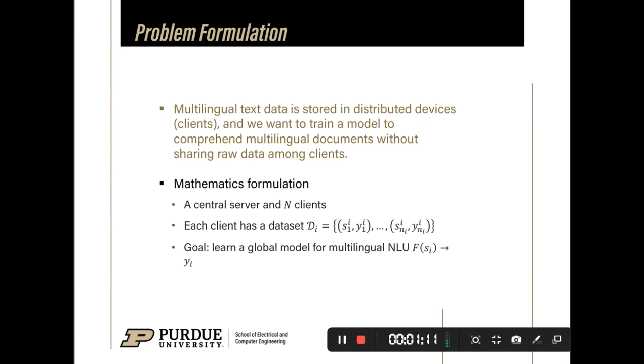Here, Sij is the text content, Yji is the label of Sji, and Ni is the number of training instances in Di. The goal is to learn a global model for multilingual natural language understanding tasks.